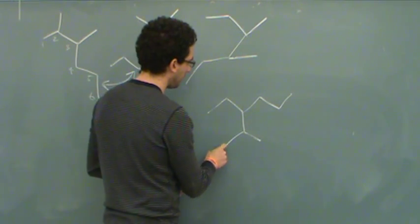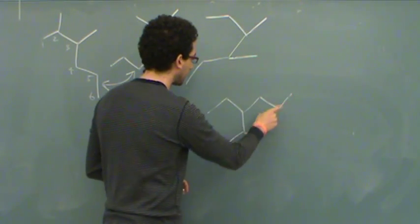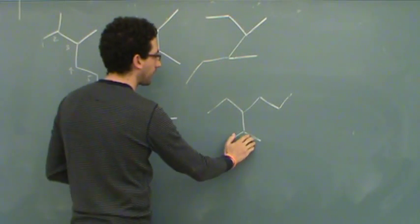And finally we've got 1, 2, 3, 4, 5, 6. The 6 is a hexane and we've got a methyl and an ethyl. But the ethyl is on the 3 position and this is on the 2.